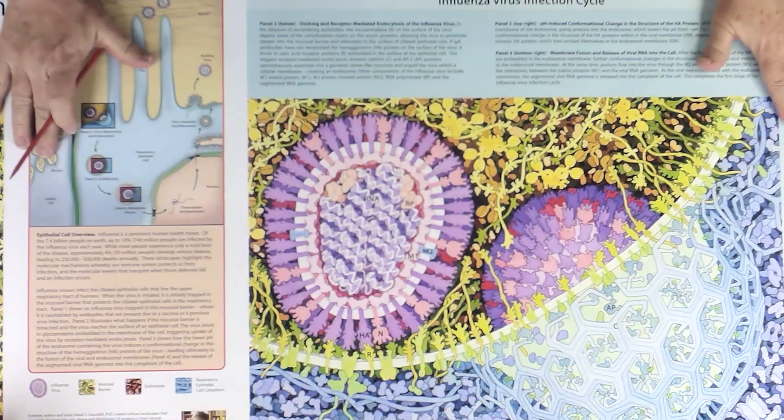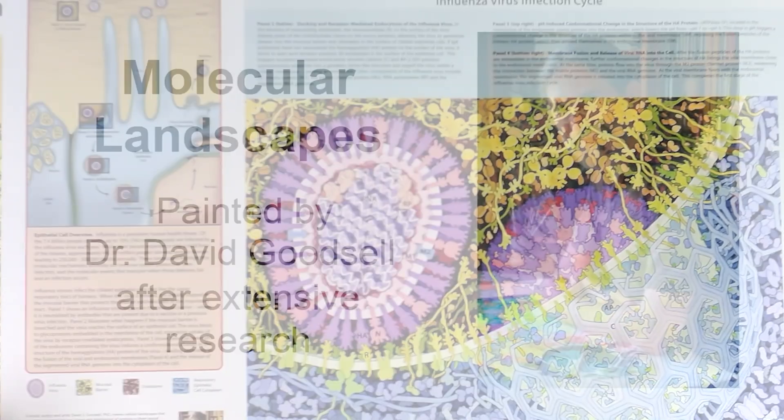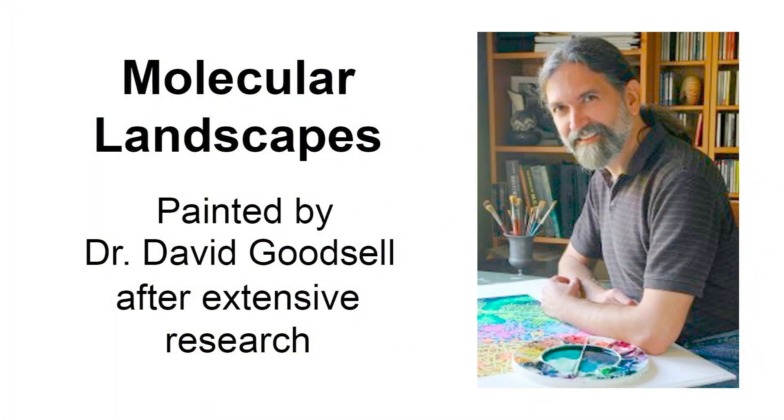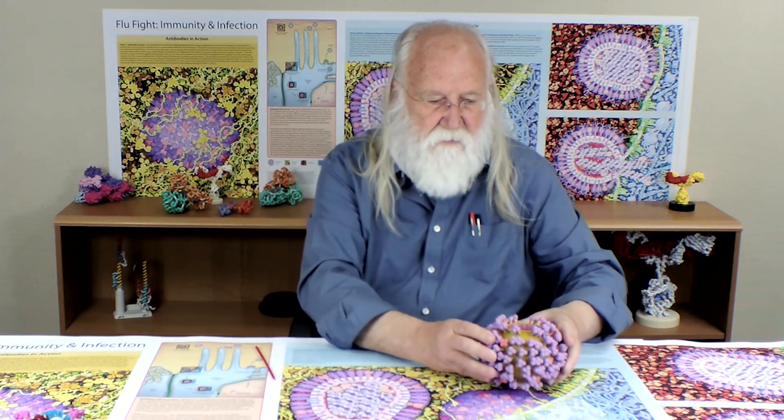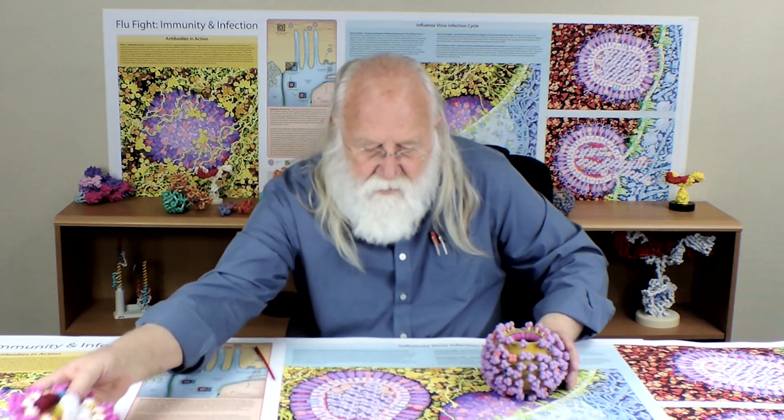We're going to focus on this molecular landscape, which David created several years ago. He created it in order to tell the story of how influenza virus infects us. There are a lot of similarities between influenza virus — this virus here — with the hemagglutinin protein on the outside, and the coronavirus, which is also an envelope virus with spike proteins.